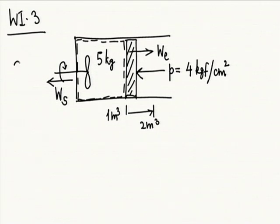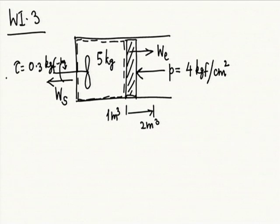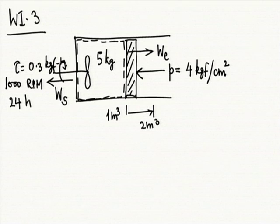Torque is 0.3 kgf-meter, speed is 1000 rpm, duration is 24 hours. This is the system diagram. How does the process go?